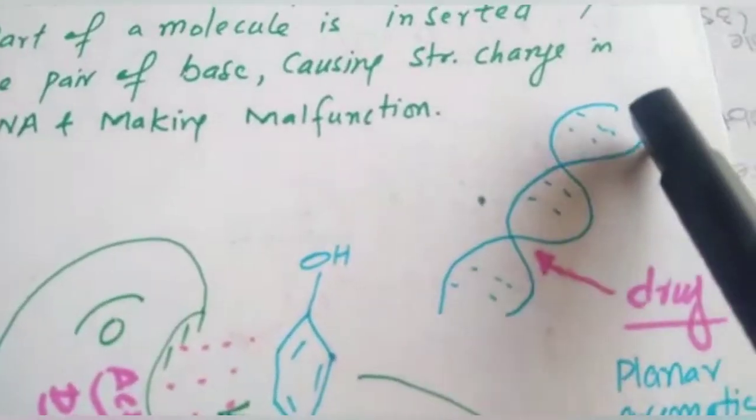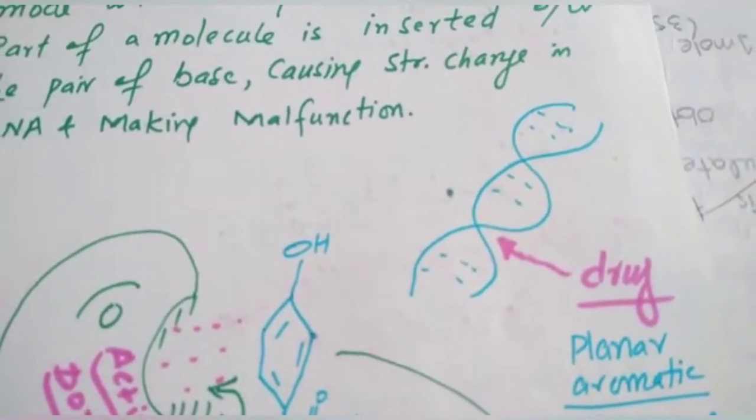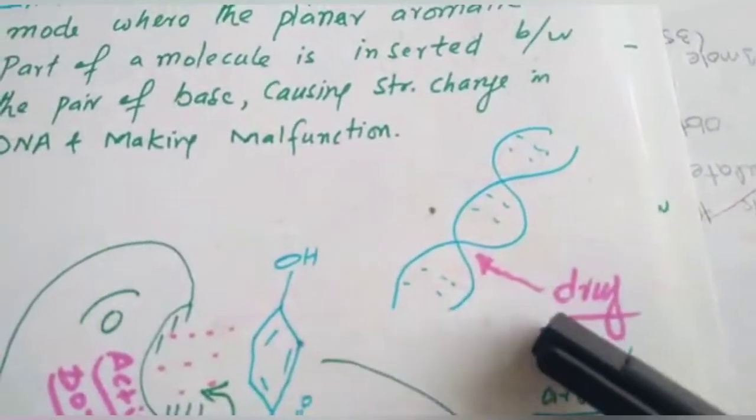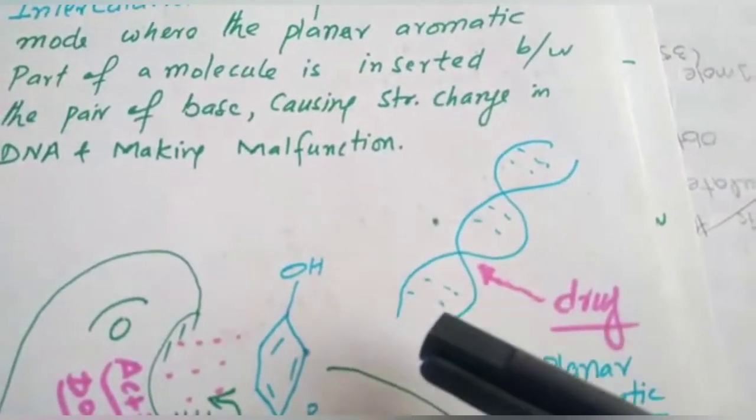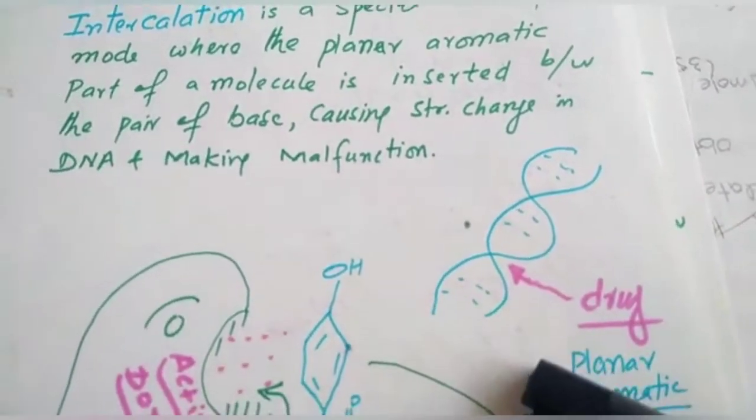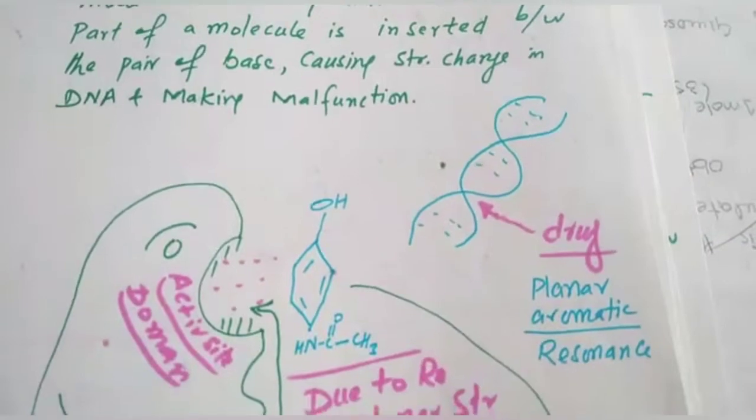For example, this is the structure of DNA. And once the drug tries to insert here in these spaces for the dysfunctioning of DNA, this phenomenon is known as intercalation.